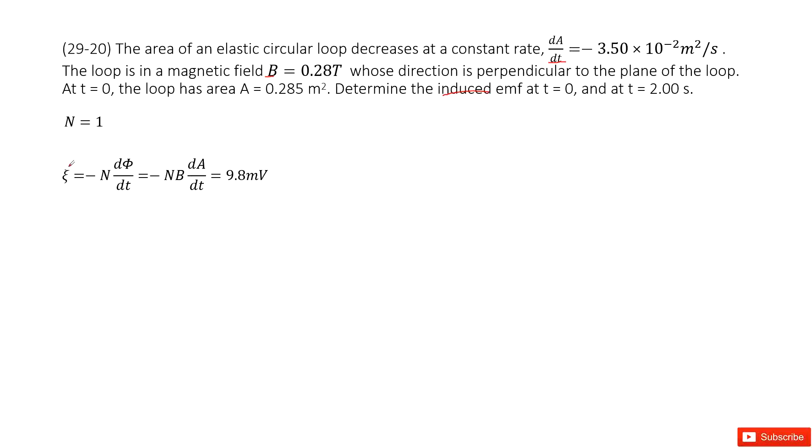So now we can consider the induced emf in this function. N is how many times for this loop? Just one time. So it looks like we need to do the derivation of phi with t. This is the magnetic flux.